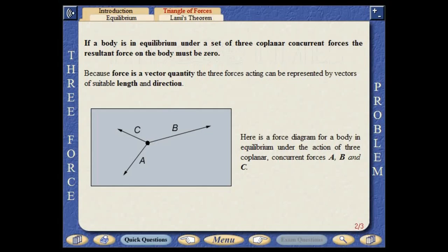The resultant force on the body must be zero. Because force is a vector quantity, the three forces acting can be represented by vectors of suitable length and direction. Here is a force diagram for a body in equilibrium under the action of three coplanar concurrent forces A, B and C.